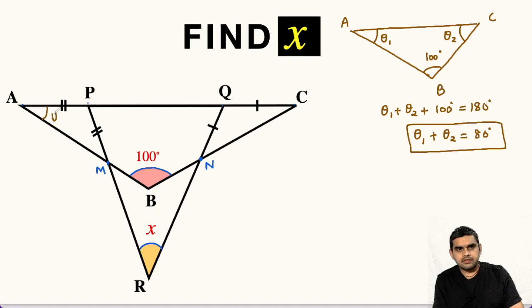So this is theta 1, this is theta 2. Now focus on triangle APM. This triangle here, AP is equal to PM, so it is an isosceles triangle. So this angle will also be theta 1.